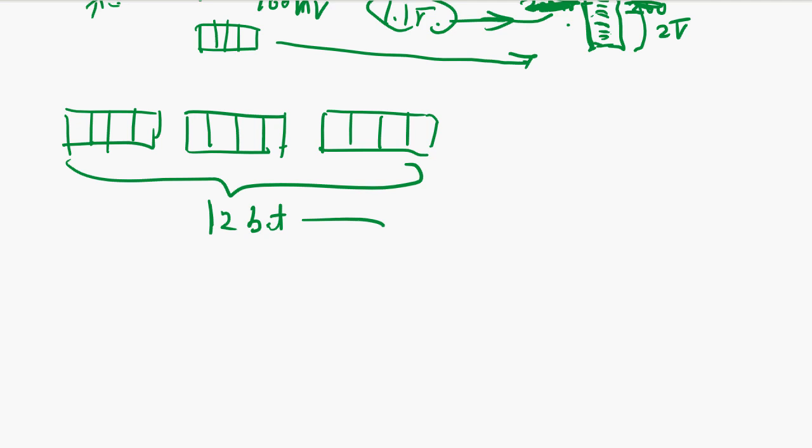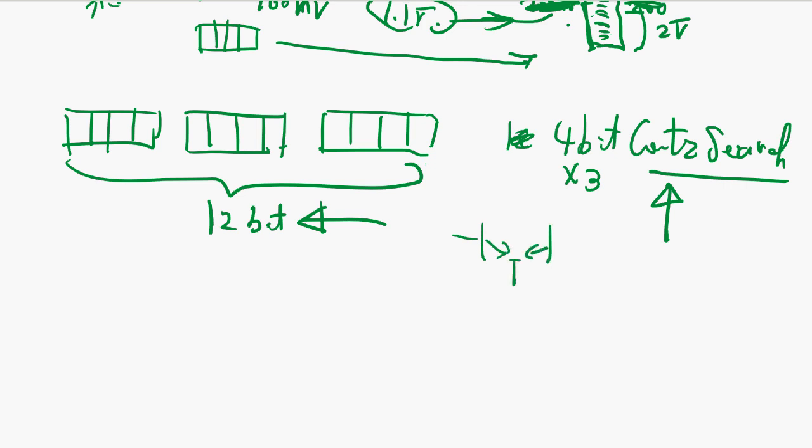12-bit answer by searching it. This is the search counter - 4 bits by 3 counter search. You search the exact voltage which is closest to the reference voltage. The reference voltage is going to be at each stage: the first 200 millivolt division, and next stage is actually 20 millivolt division but it's amplified by 10, and next one is 2 millivolts.